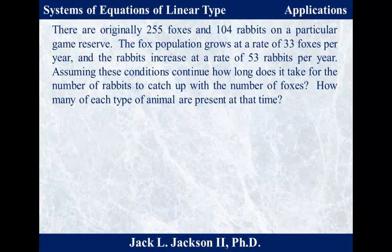There are originally 255 foxes and 104 rabbits on a particular game reserve. The fox population grows at a rate of 33 foxes per year, and the rabbits increase at a rate of 53 rabbits per year. Assuming these conditions continue, how long does it take for the number of rabbits to catch up with the number of foxes? How many of each type of animal are present at that time?